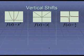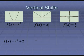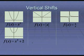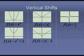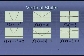Vertical shifts move a graph up and down. If we add or subtract something to the end — not attached to the x, but to the entire function — it shifts vertically. For example, f(x) = x² + 2 moves the graph up 2. Absolute value of x minus 2 moves it down 2. And 1/x plus 3 moves it up 3. Those are your vertical shifts.